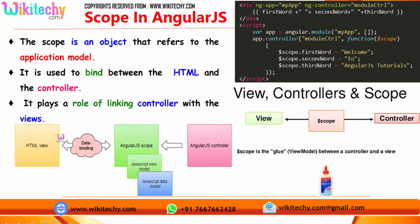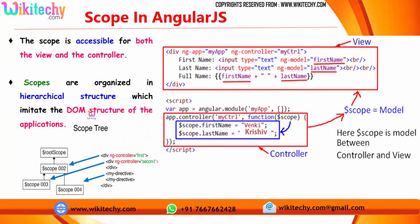Coming back here, you are able to see the view is here and the controller is here. Scope will bind the view and the controller. In AngularJS, scope is in the middle — view is here, controller is here — and it can have view model and data models. Everything is bound between these two. The scope is accessible for both the view and the controller. Controller can access it, and view can access it.